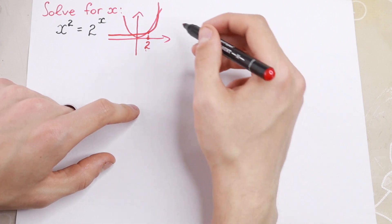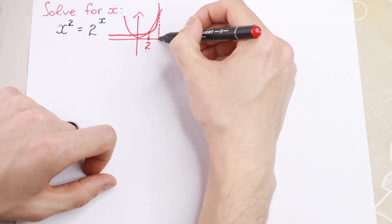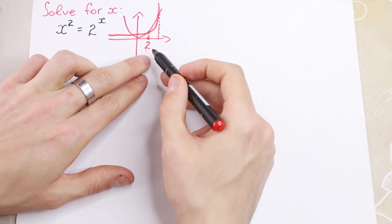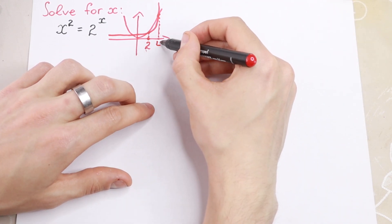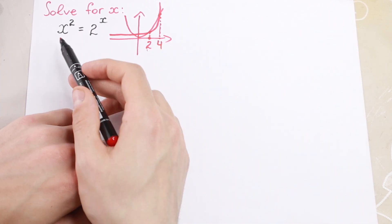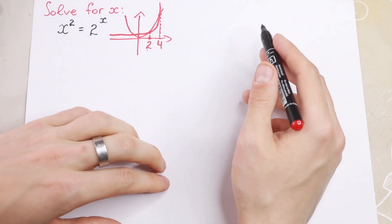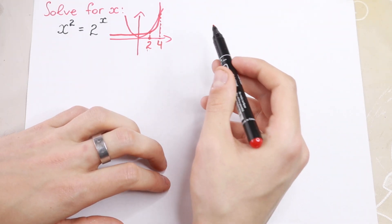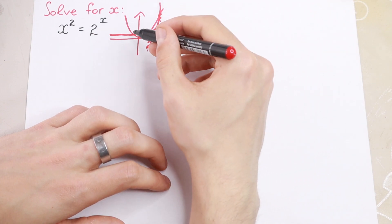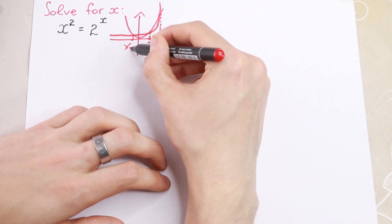If we think more, we will see that right here we'll have one more point. It's a little bit more complicated, but right here we'll have the second point: x equals 4. Because 4 squared equals 2 to the fourth power, and this is correct. But then I noticed that right here we'll have one more point of intersection — our third root, x₃.